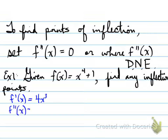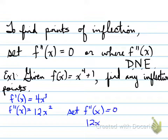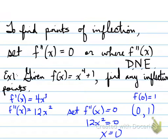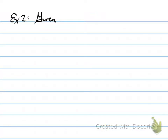Given f(x) = x⁴ + 1, find any inflection points. Take the first derivative, take the second derivative, set the second derivative equal to zero. We find out that x equals zero, and we find the point. That point is a possible point of inflection. To find out if it is, you need to use a table — an interval chart.